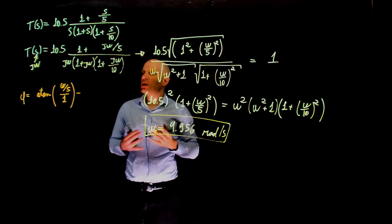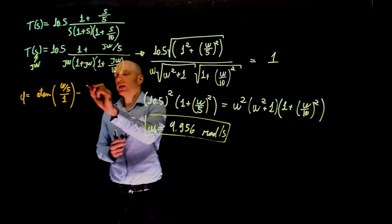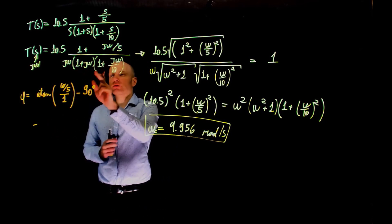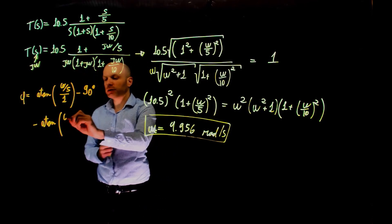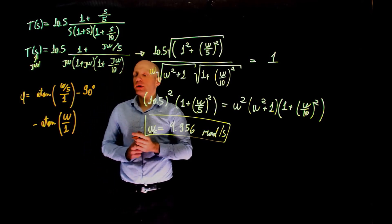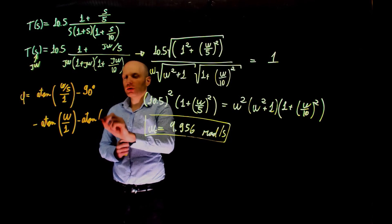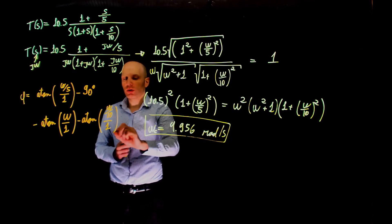Now minus the sum of the angle of all poles. We have a pole at the origin. We know that has a phase of negative 90 degrees. Minus the phase of this pole, inverse tangent of its imaginary part divided by the real part, and minus the phase of the last pole, imaginary part omega over 10 divided by the real part 1.